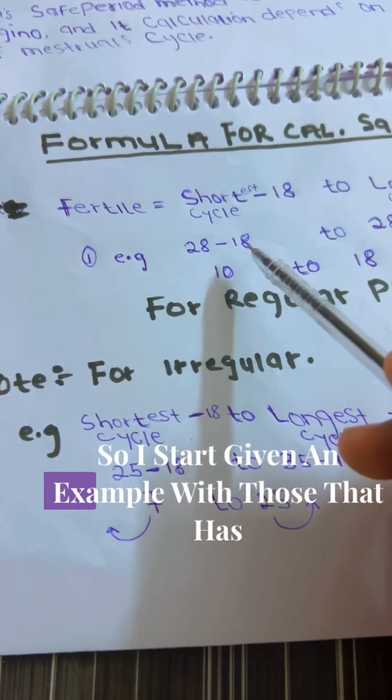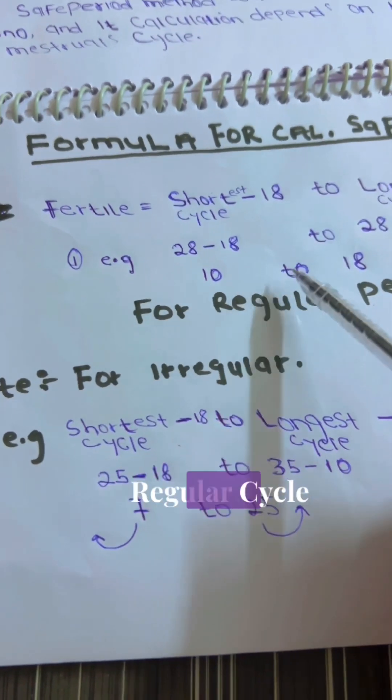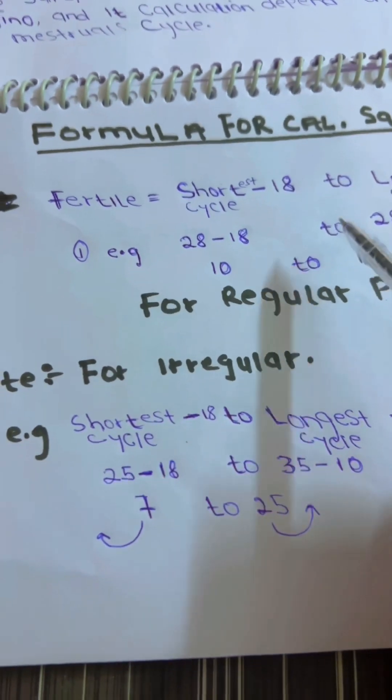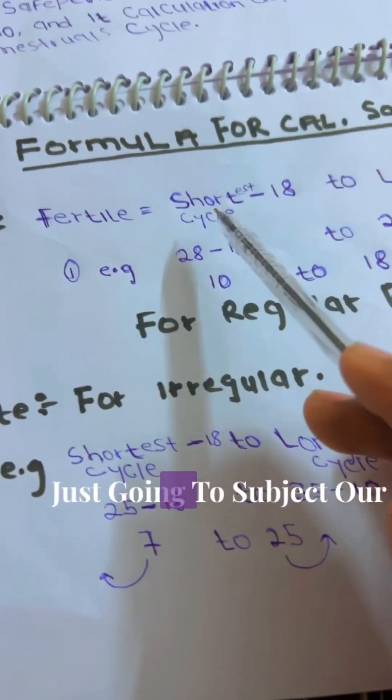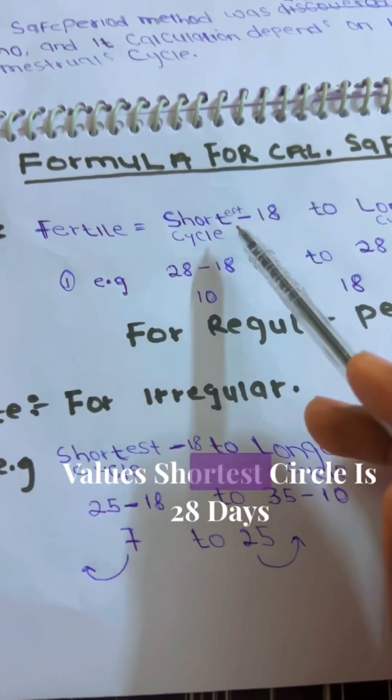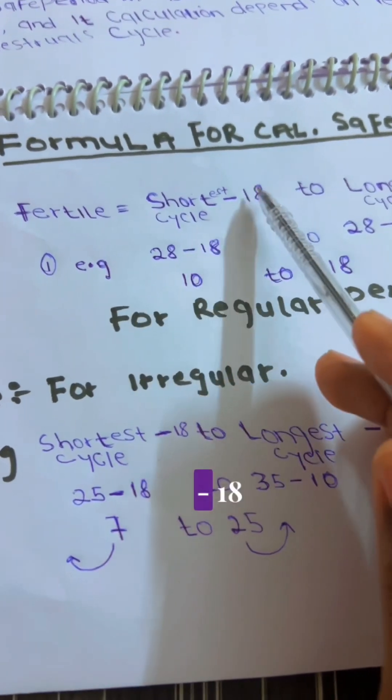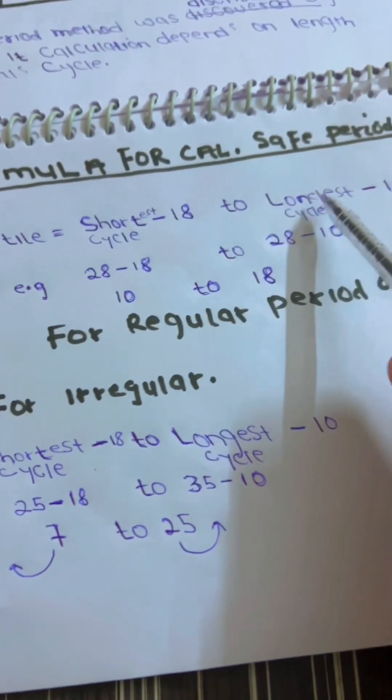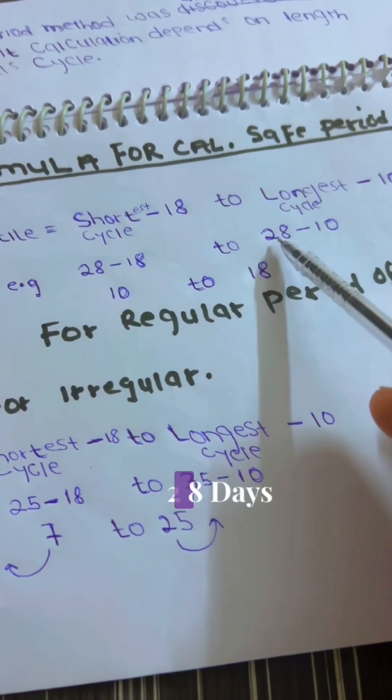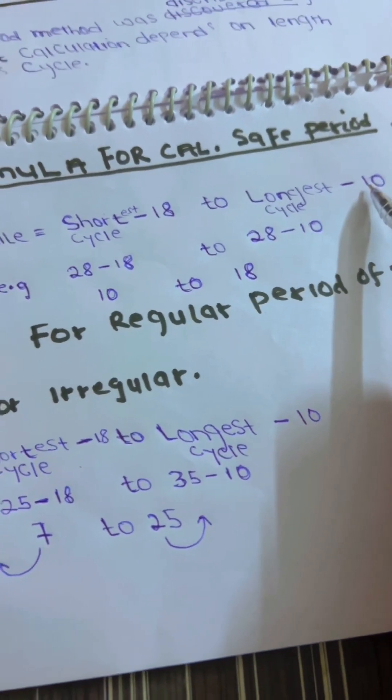So, I start giving an example with a person that has a regular cycle, a cycle of 28 days. We are just going to substitute our values. Shortest cycle is 28 days minus 18, to longest cycle, 28 days minus 10. It is in the formula.